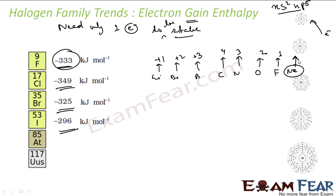For neon, the electron gain enthalpy will be highly positive because neon is already stable. If you try to give an electron to neon, it won't accept easily since it would lose stability, and you'd have to provide extra energy. But giving an electron to fluorine is very easy — fluorine is badly looking for an electron. Thus, the electron gain enthalpy is negative for all elements in group 17, and they have the maximum negative value since they need just one electron to attain noble gas configuration.